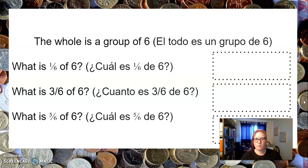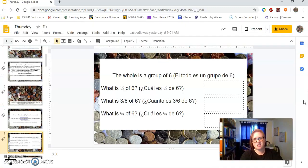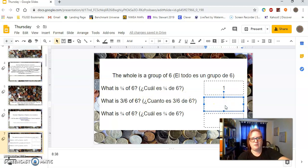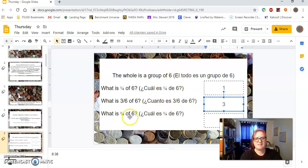So this is your math warm-up for this morning. The whole is a group of six. What is one-sixth of six? How many would that be? If the group is six, how much would one-sixth be? I'm actually going to do this one for you, and then you can do the other ones. What is three-sixths of six? That would be three out of six. If six is the whole, then that would be three out of six. What is five-sixths of six? It would be five.